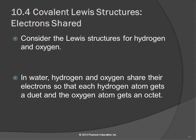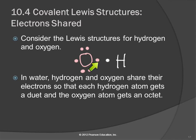Let's look at hydrogen and oxygen. Oxygen has six valence electrons, and hydrogen has one valence electron. What's going to happen is, instead of hydrogen giving its electron to oxygen, or oxygen giving an electron to hydrogen, they're going to share.